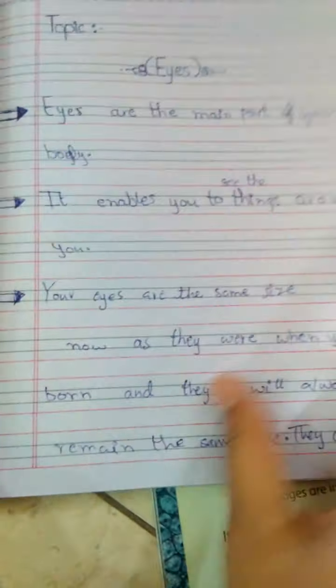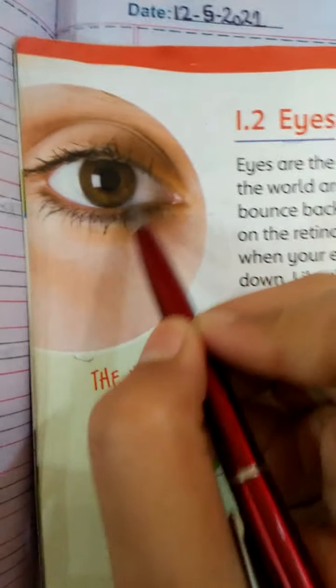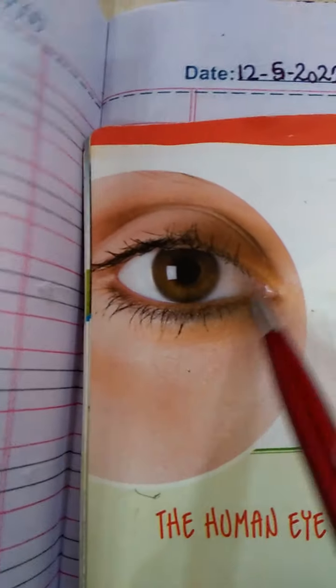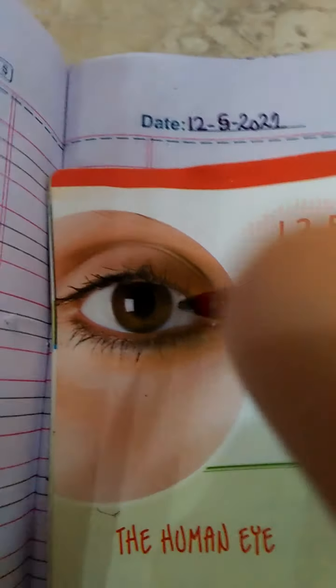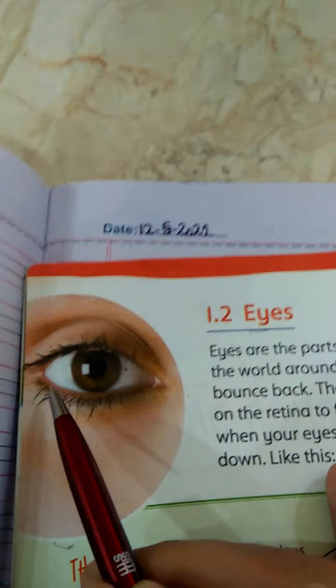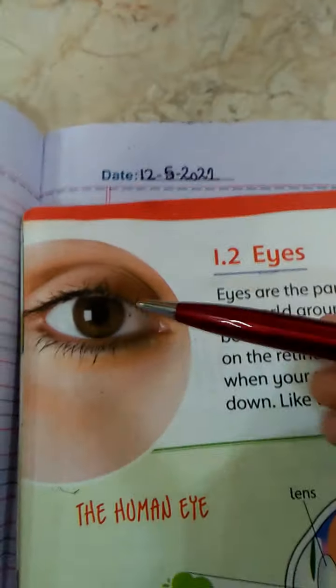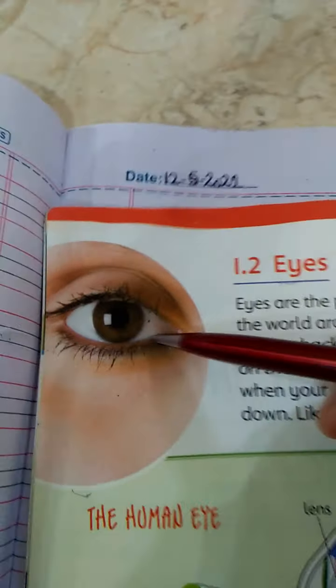Your eyes are the same size now as they were when you were born, and they will always remain the same size. They do not grow at all. What is the point of this? This point means that the eye, when we were born, the eyeball white and black, the ball is the same, but the shape of the outside grows.